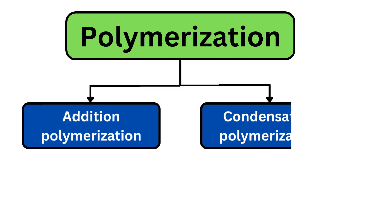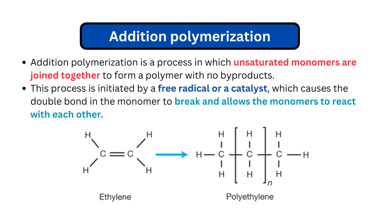We can produce polymer in two ways: one is addition polymerization and the second is condensation polymerization. In addition polymerization, unsaturated monomers are joined together to form the polymer with no byproducts. This process uses free radicals or a catalyst, which break the double bond of the monomer and allow the monomers to react with each other.